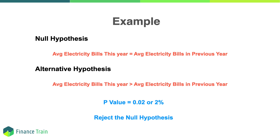Let's say the p-value is 0.02 or 2 percent. At a significance level of 5 percent with a p-value of 2 percent, the researcher will reject the null hypothesis and accept the alternative hypothesis that the average electricity bills this year for the population are higher than the previous year. This is because there is only a 2 percent chance that the results from the sample are random, so the results of the sample are believable and a good representative of the population.